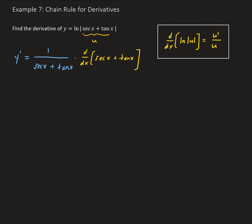So that's applying the chain rule. We're going to get 1 over secant x plus tangent x. Taking the derivative of this, the derivative of secant x is secant x tangent x. The derivative of tangent is secant squared.